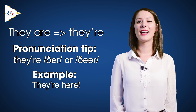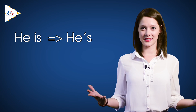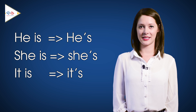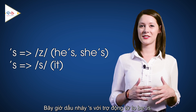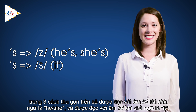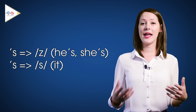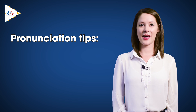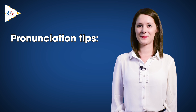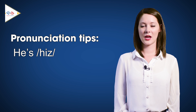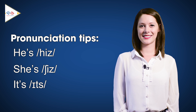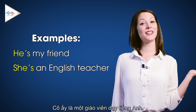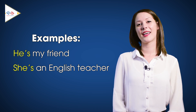Pronunciation tip: they're. He is becomes he's. She is becomes she's. It is becomes it's. The apostrophe S for the word is in these three contractions is pronounced as a Z sound for he and she, and as an S sound for it. Pronunciation tip: Z — he's, she's. S — it's. Examples: He's my friend. She's an English teacher. It's my turn to do it.